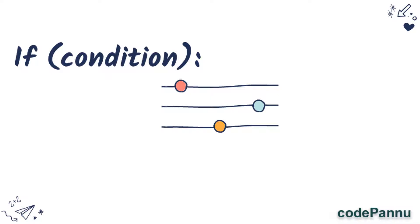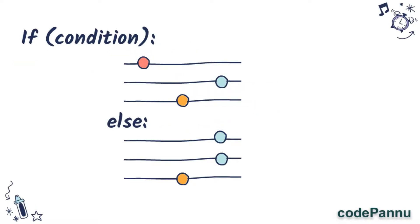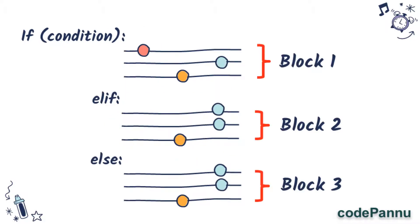We know how to write the if condition, right? So we write if, then the condition, then the colon, and below that we will write a set of instructions. And then we already have the else statement where we write the second set of instructions. Now here, what we are going to do is write an elif condition which will have our second set of instructions, and then the else which will have the third set of instructions.